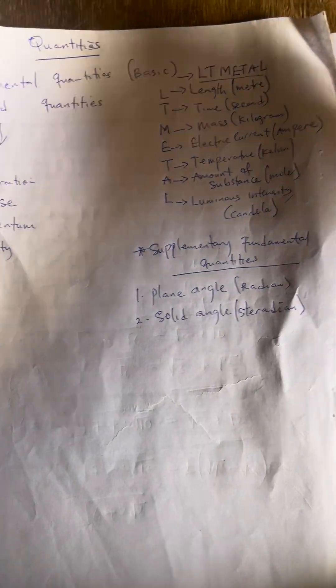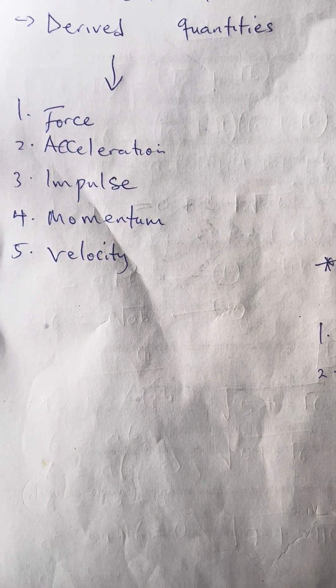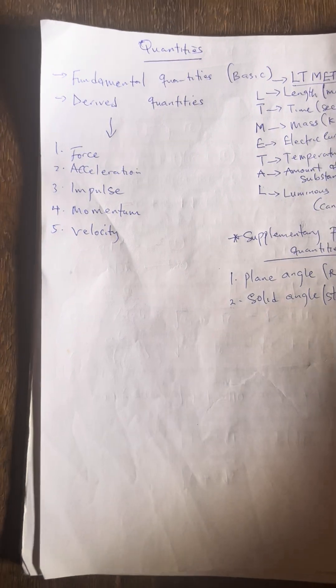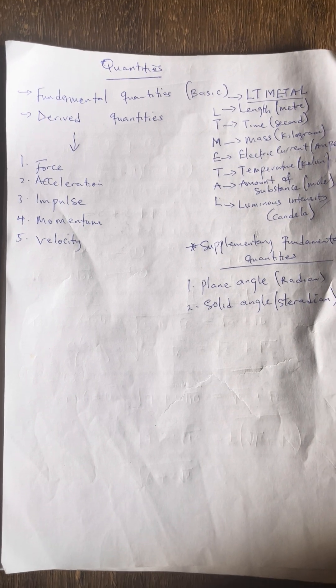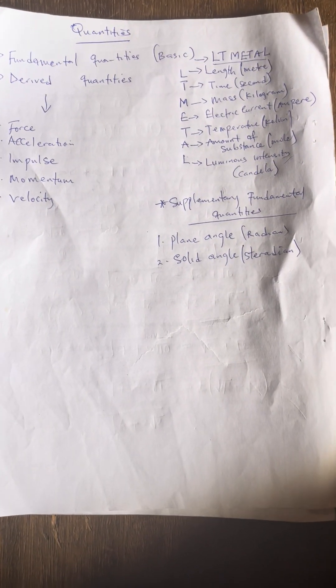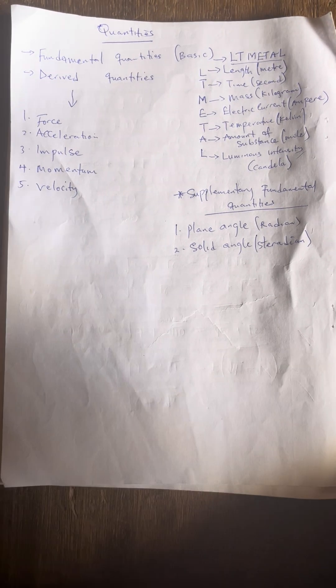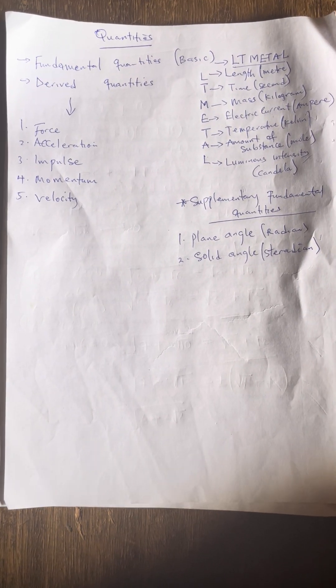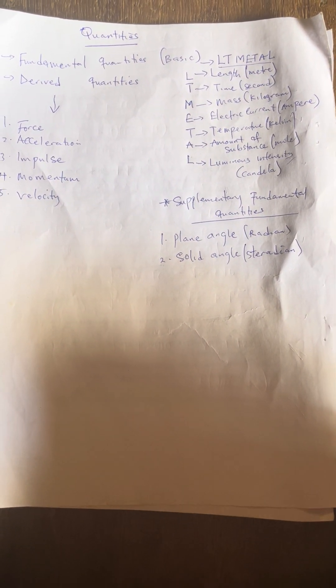Don't forget the rule: any quantity that is different from all these fundamental quantities is known as a derived quantity. I've given you five examples of derived quantities. At the comment section, let us have an additional five derived quantities — we have a lot of them. Like, comment, share, and subscribe to our channel. Thank you very much. God bless you. Let me have your answer at the comment section.